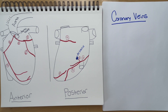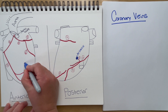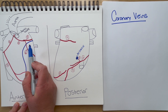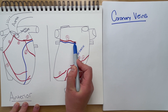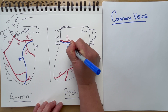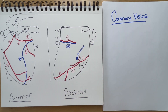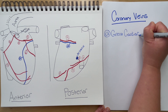Now let's move on to our coronary veins. The coronary veins bring deoxygenated blood from the myocardium back to the right atrium so that it can go to the lungs and pick up oxygen. Our first vein is the great cardiac vein. It starts around the apex of the heart, goes through the interventricular septum, and ascends upwards towards the left atrium, then wraps around the heart towards the posterior side and ends around the middle at what we call the coronary sinus. We'll label this A — the great cardiac vein.